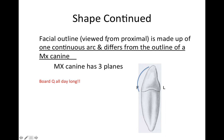A couple of questions come up regarding the outline of the facial surface. The facial outline when viewed from the proximal is made up of one continuous arc — it's smooth and just one arc. This is different from the maxillary canine, which has three planes. This is a board question you'll see a lot in practice tests.